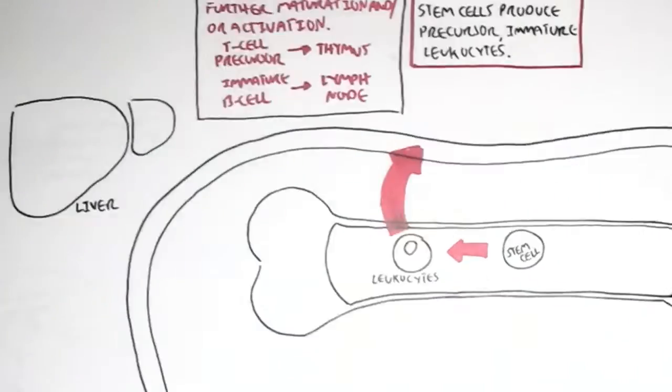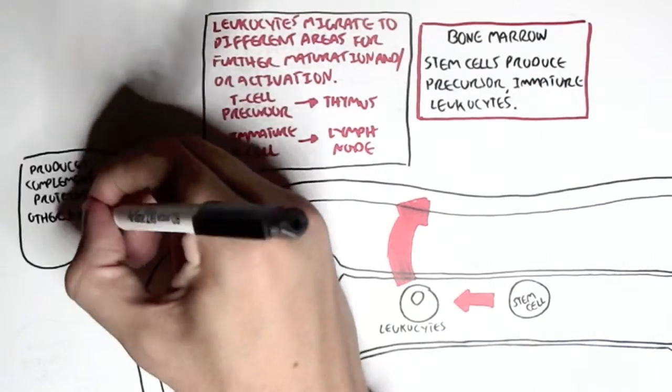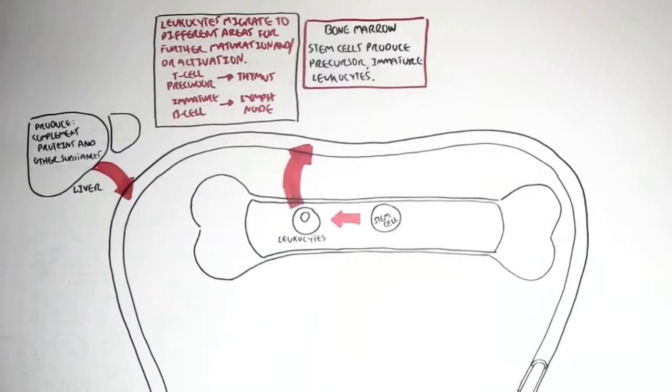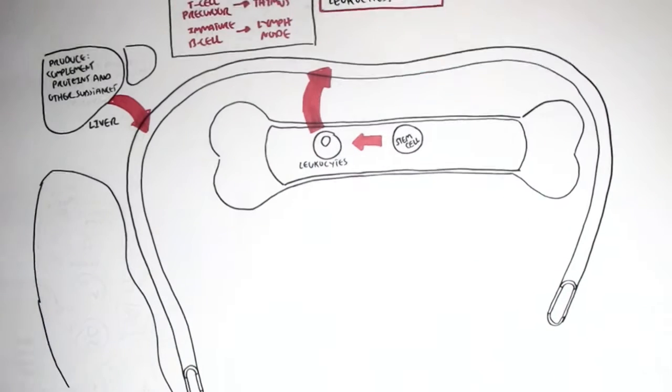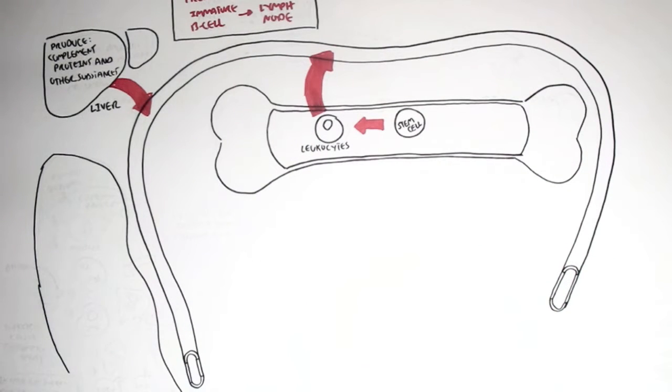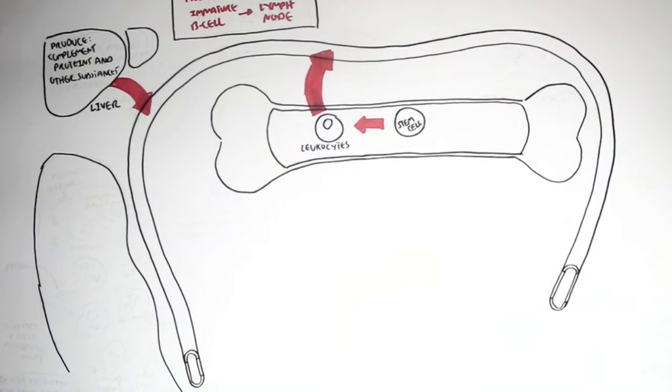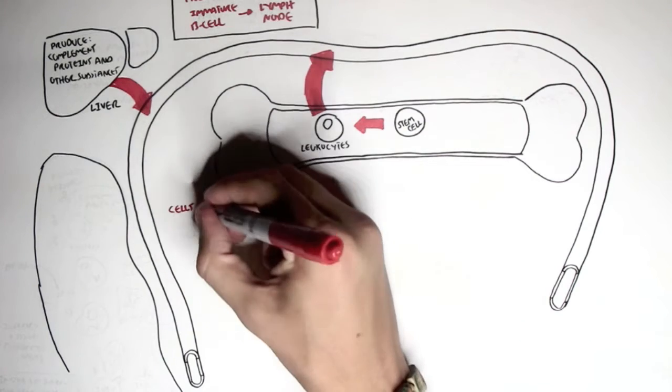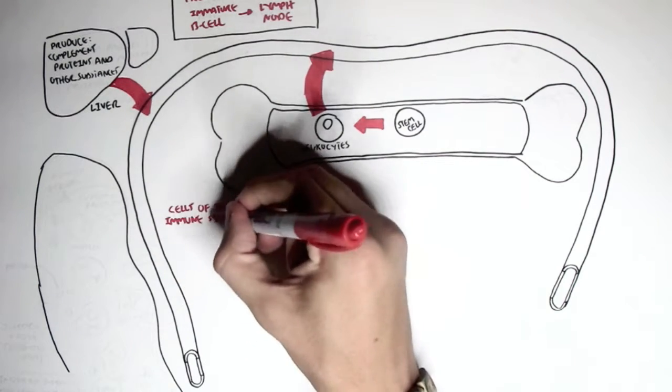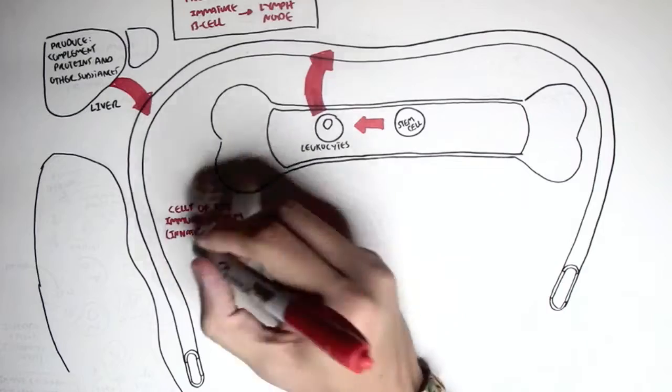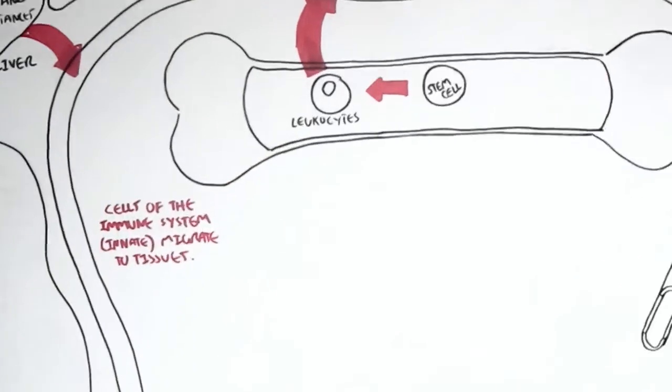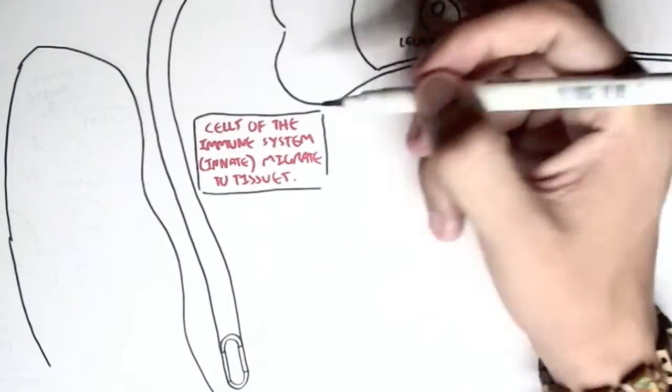The liver produces complement proteins and other substances which are important for the inflammatory process. And then we will look at a typical tissue, such as the tissue beneath our skin for example, and how some of these cells will migrate into this tissue.